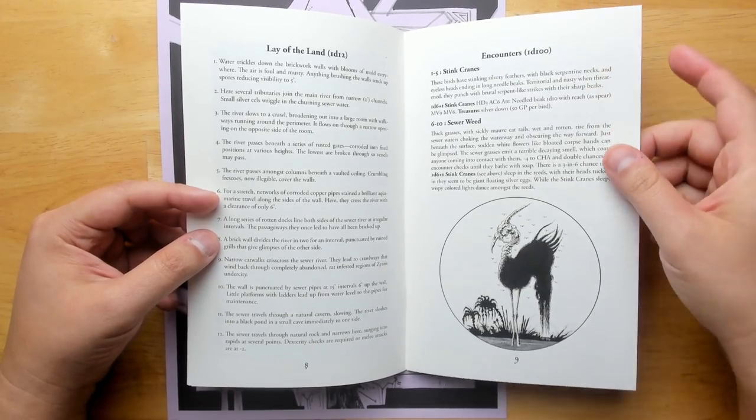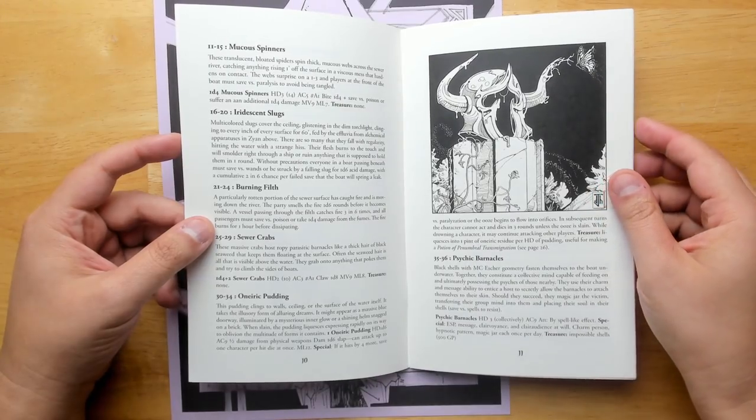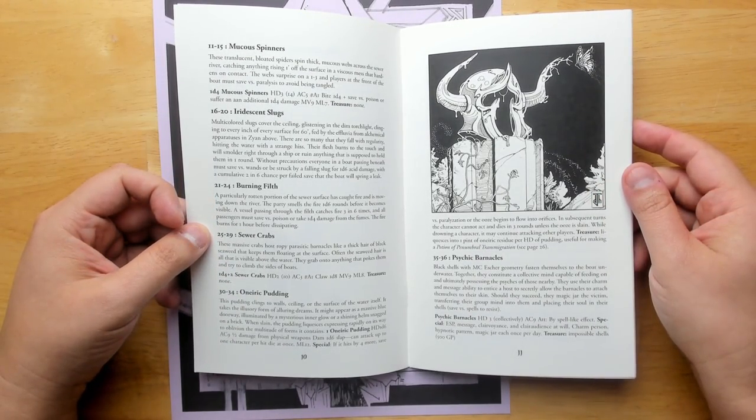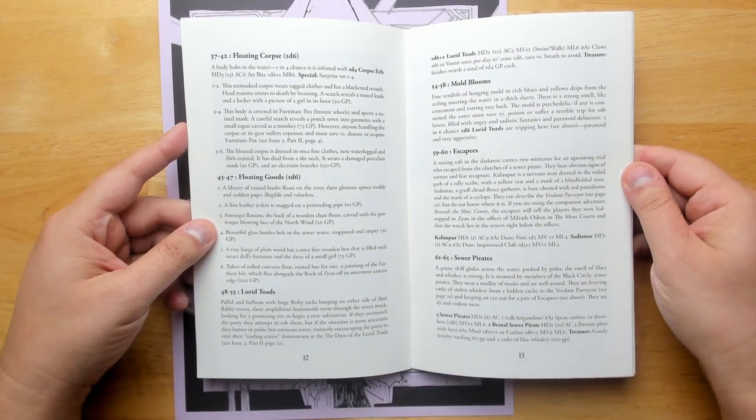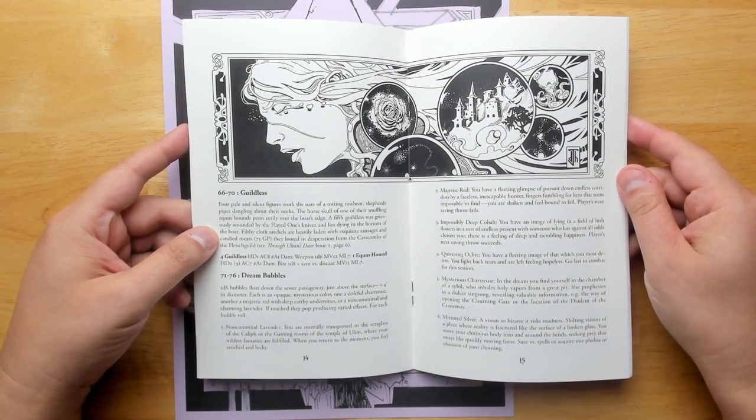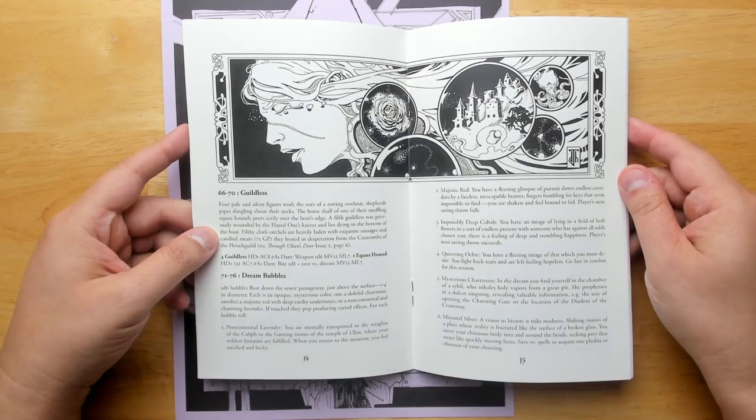We have an encounter table here, D100, anything from stink cranes to iridescent slugs, oneiric puddings which you can use to make certain types of potions, psychic barnacles, floating goods, mold blooms, sewer pirates, the guildless. Everyone in this setting seems to belong to guilds of different kinds, which requires you to wear masks showing your allegiance.